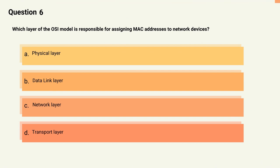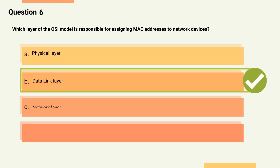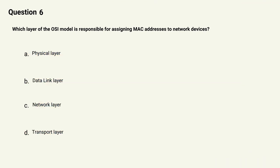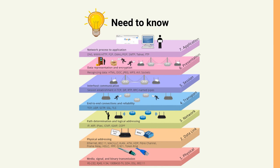Question 6: Which layer of the OSI model is responsible for assigning MAC addresses to network devices? Options: A) Physical layer, B) Data link layer, C) Network layer, D) Transport layer. The correct answer is Option B, Data link layer. Explanation: The data link layer of the OSI model is responsible for the physical addressing of devices on the network. MAC addresses are assigned at this layer and are used to identify network devices.